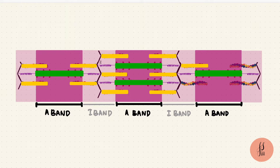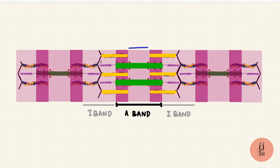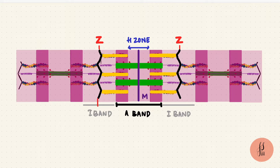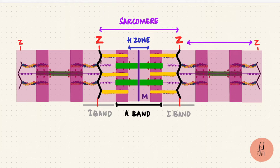At the center of the A band is a pale H zone and in the middle of that is a dark M line. The thin filaments attach to a dark Z disc or Z line. So the structure between two Z discs is called a sarcomere and there are multiple sarcomeres in a muscle fiber.